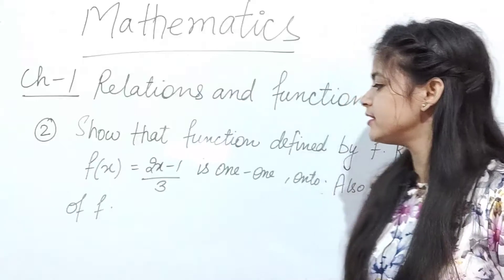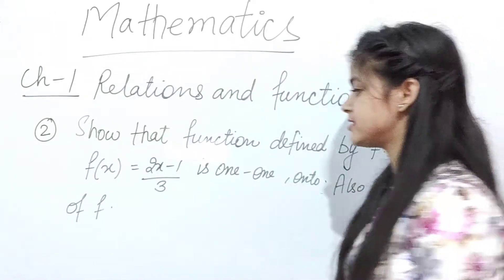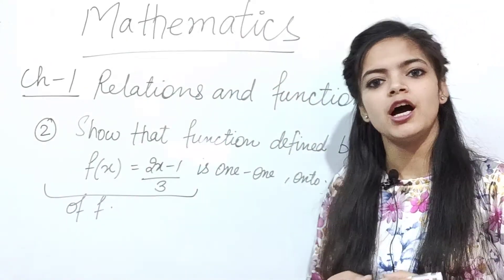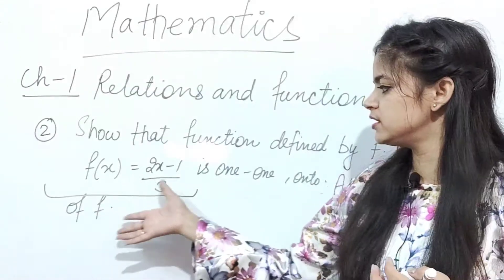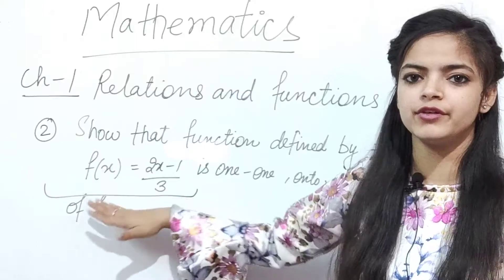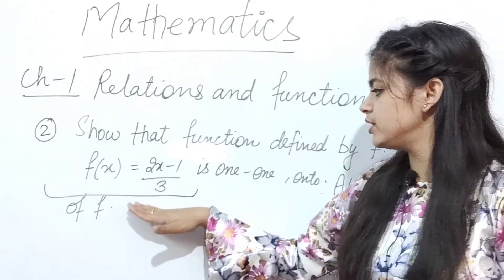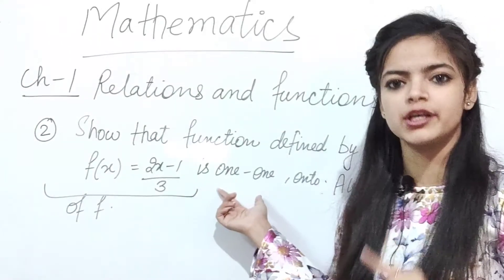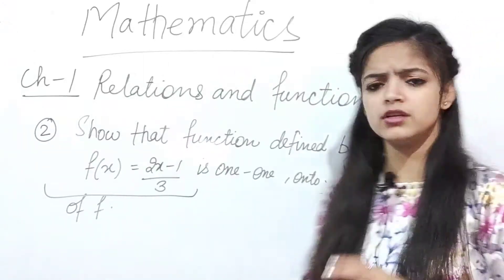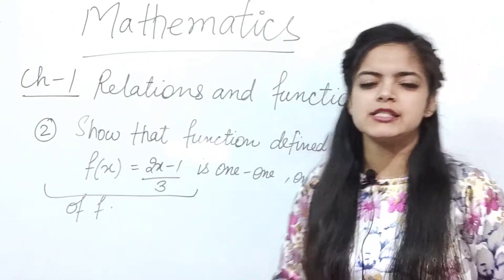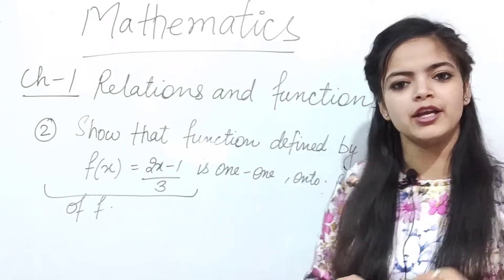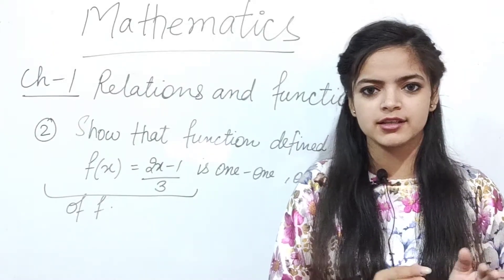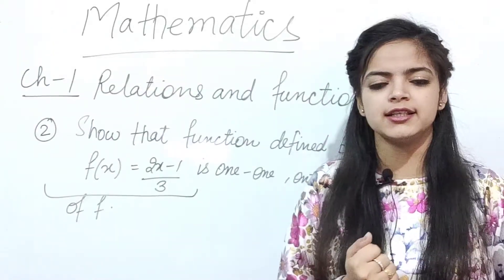So you will be able to find one-one and onto in such questions. Another way the question can come is: instead of asking whether one-one and onto, they can directly ask 'is this function invertible or not?' So for invertible, you should know that to find the inverse, you first need to check one-one and onto. Binary operations always come as a short question — one mark or MCQ only.